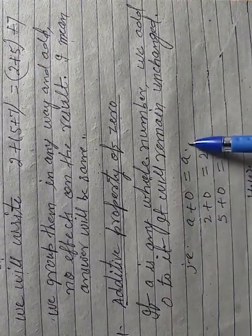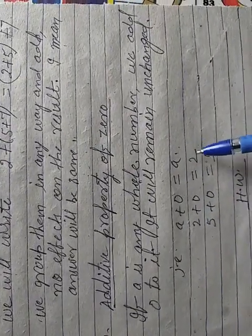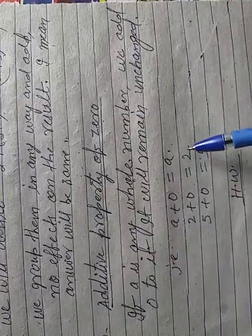Examples, a plus 0 is equal to a, 2 plus 0 is equal to 2, 5 plus 0 is equal to 5. So this is the result.